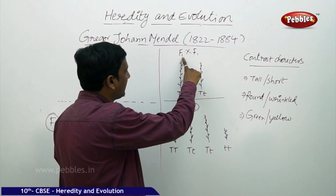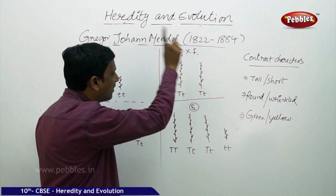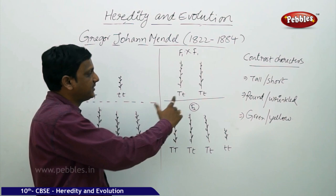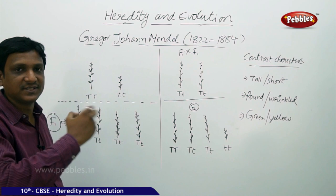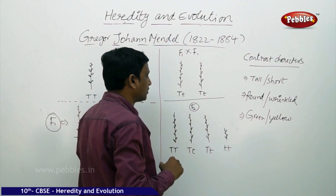Now the F1 plants are crossbred again for the second progeny — F1 into F1. In F1, there are two genes: one is capital T, the other one is small t. One is expressing tallness, the other one is expressing shortness. These are crossbred, and we can see the result.